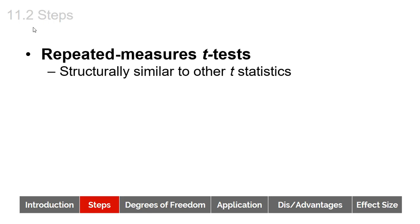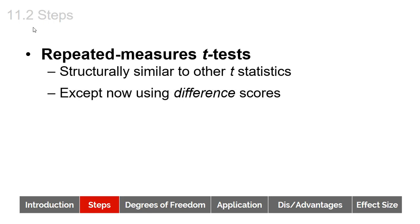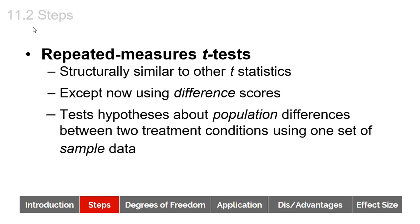The repeated measures t-test is structurally similar to other t-statistics, but now we're going to be using something called difference scores, and we're going to test hypotheses about population differences between two treatment conditions, but this time we're only using one set of sample data — in other words, one group of participants measured two different times.